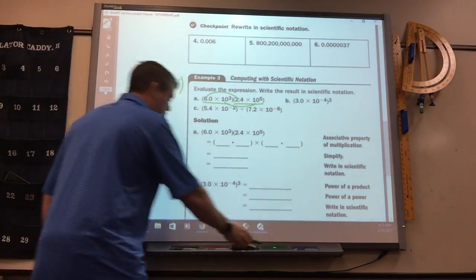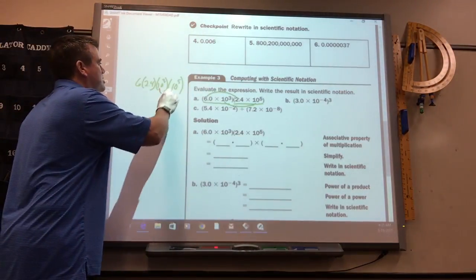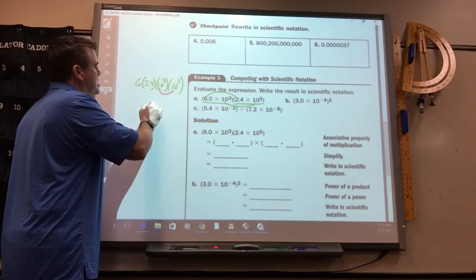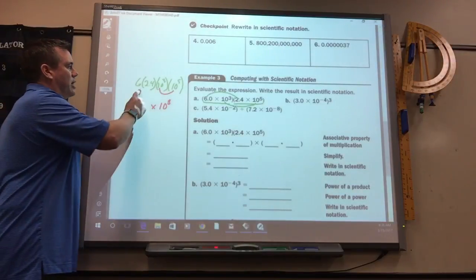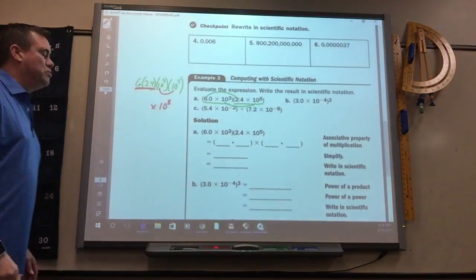Right. So using our rules, this makes 10 to the 8th. So it's going to be something times 10 to the 8th. So in order to figure out what it is, you've got to take 6 times 2.4.